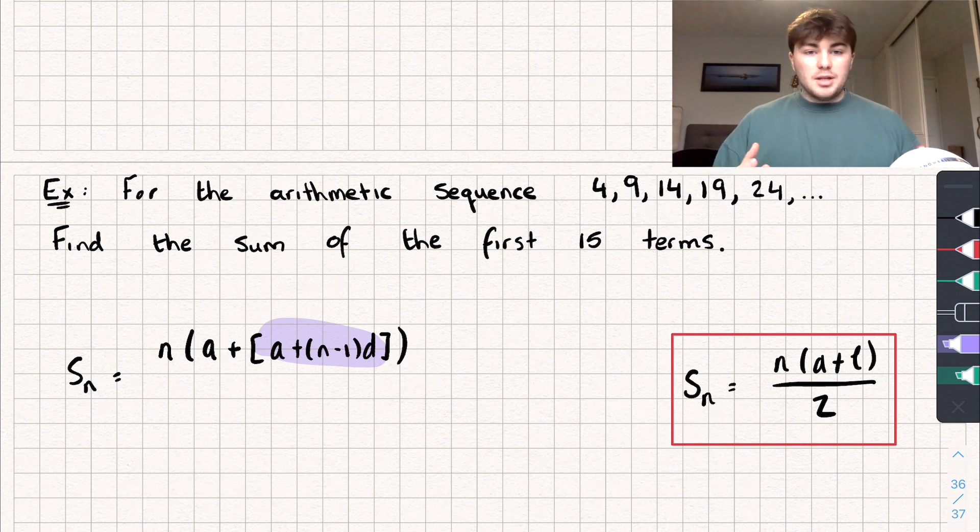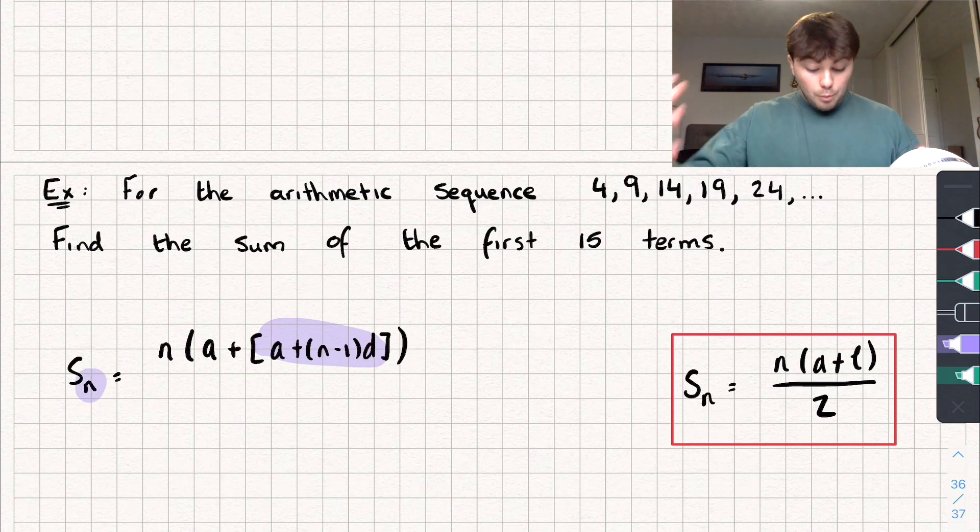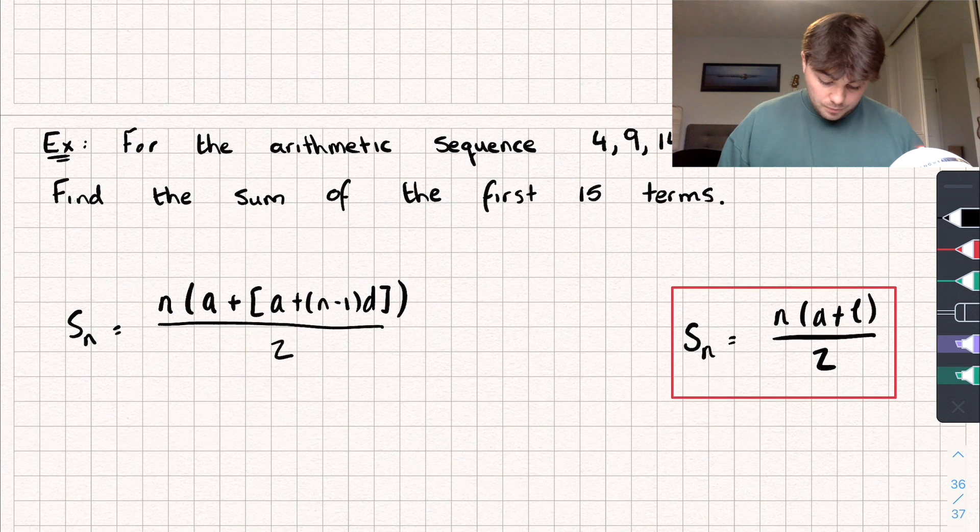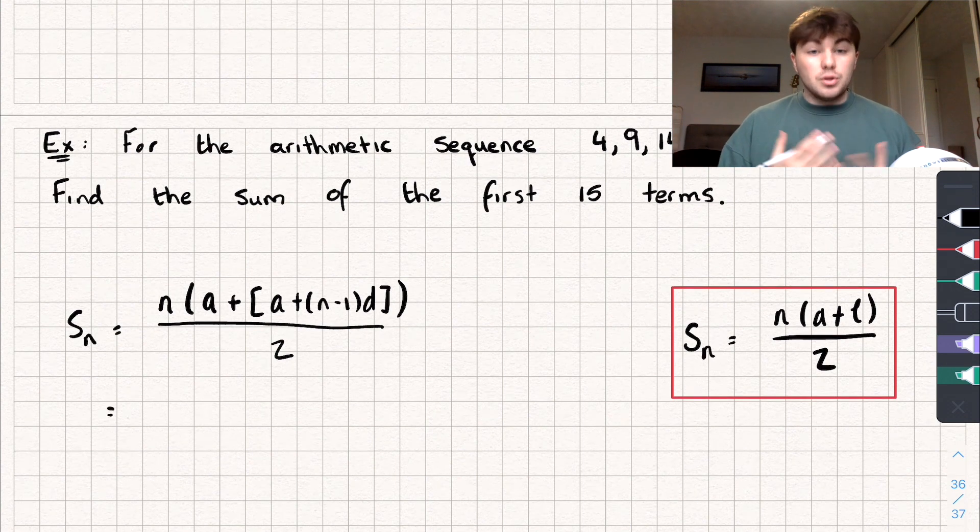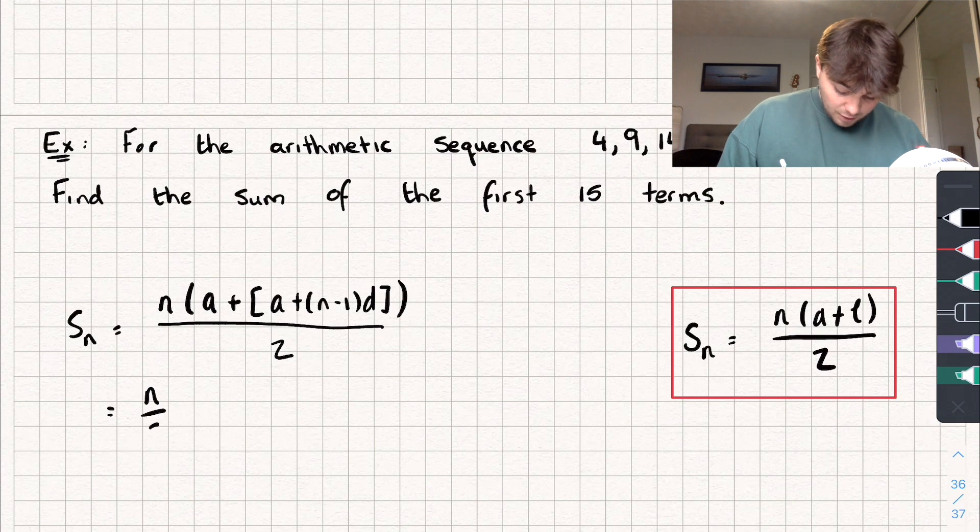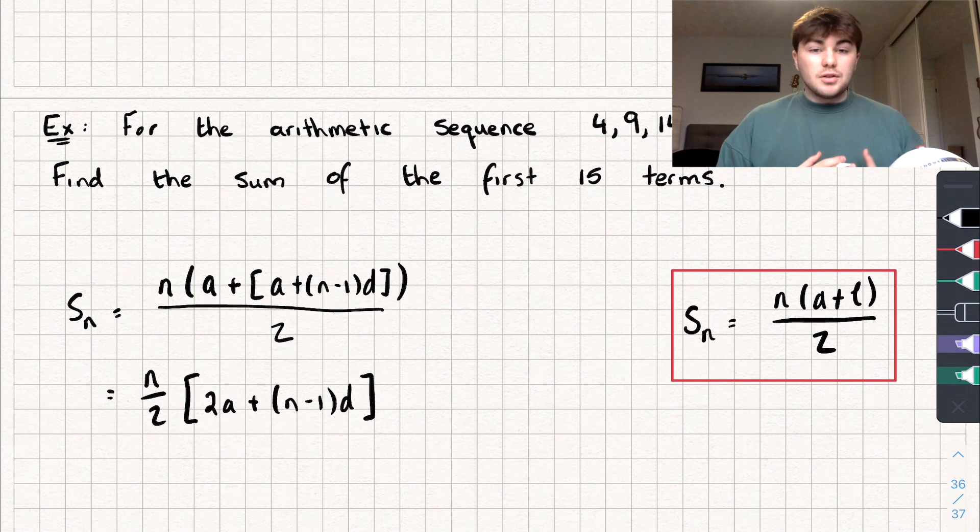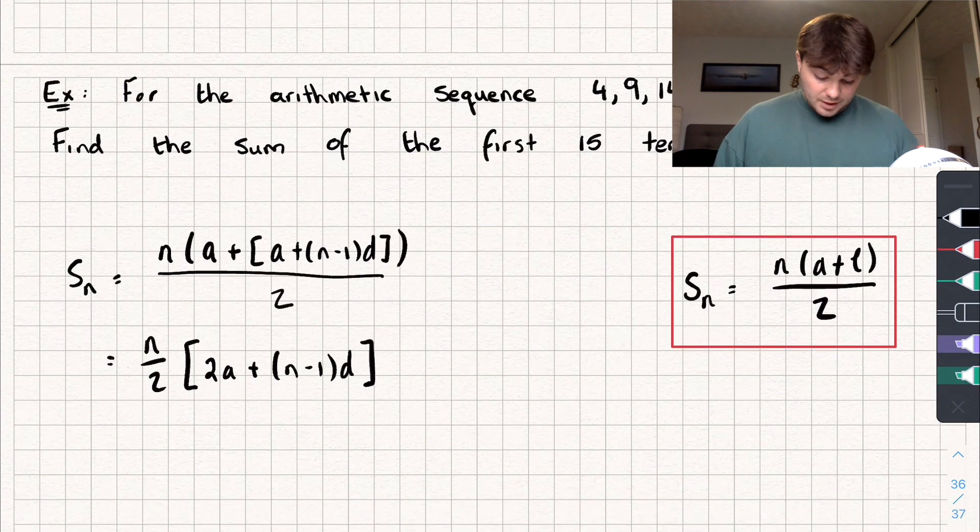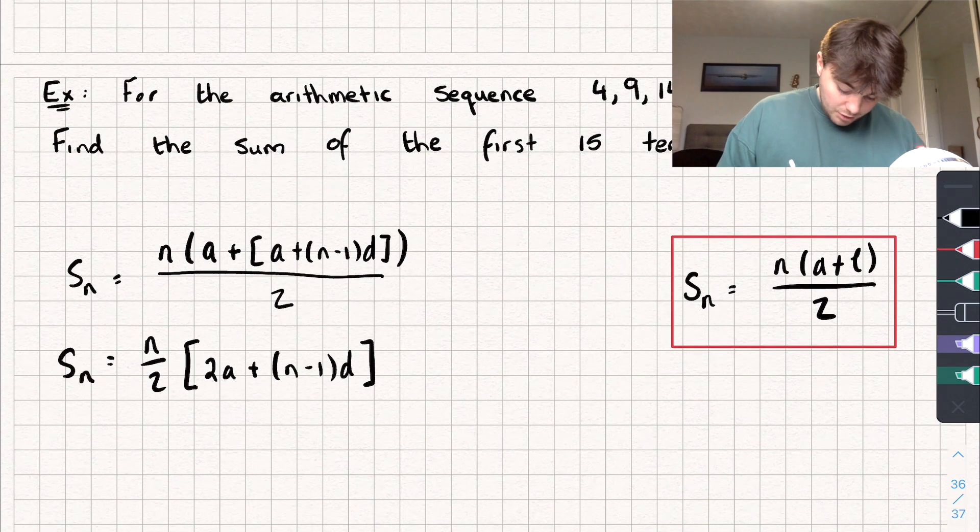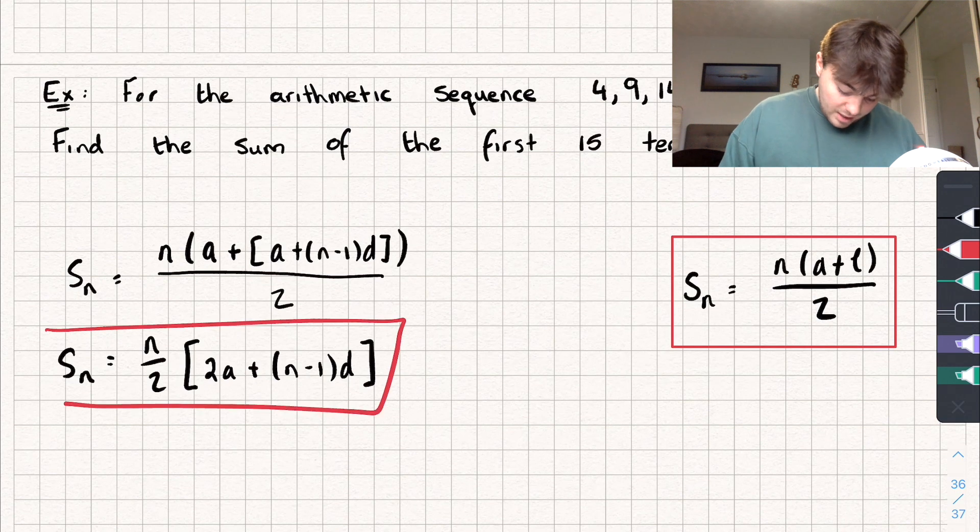So the last term is just going to be equal to A plus (N minus 1)D, because this here is the formula for the nth value. And so whatever the last term is, when we set N equal to that, that will pop that out there as our value of L, and then we're just dividing that all by 2. And if you rearrange it, you actually get a formula that you've probably seen before, which is N divided by 2 multiplied by 2A plus (N minus 1) times D. And so now all I have to do to find the sum of the first 15 terms is use this new formula here for S_N.